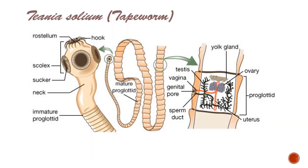The scolex has a row of hooks called the rostellum, and suckers. Rostellum and suckers together form the scolex, also called the organ of adhesion, with the help of which Taenia solium gets firmly attached to the intestinal wall of the host. New body segments are proliferated from the neck region throughout the life. A highly magnified view of a mature body segment shows both male and female sex organs, confirming that Taenia solium is a hermaphrodite organism.